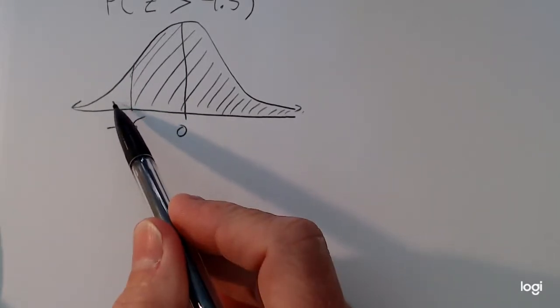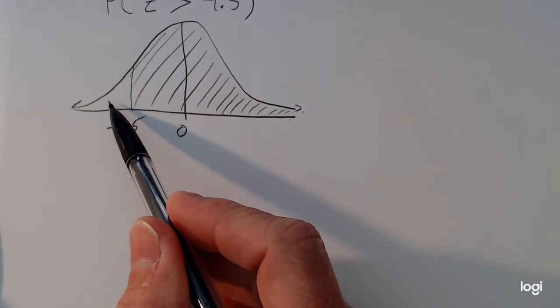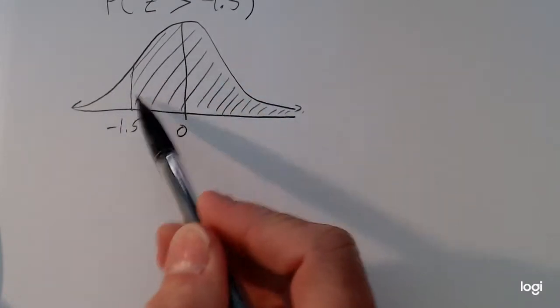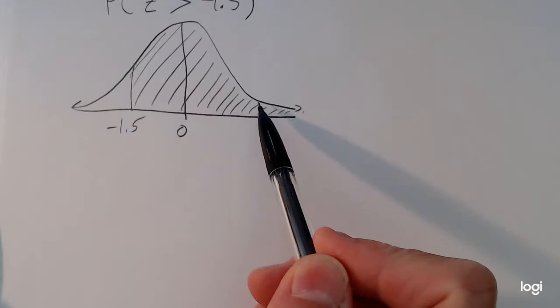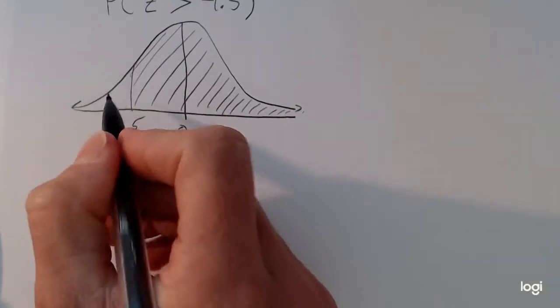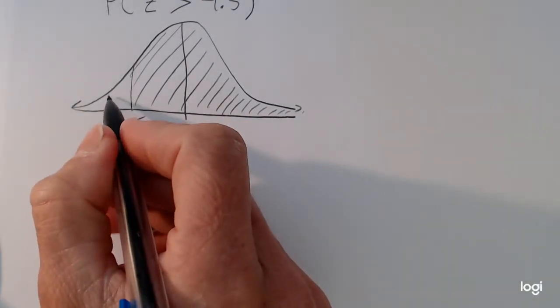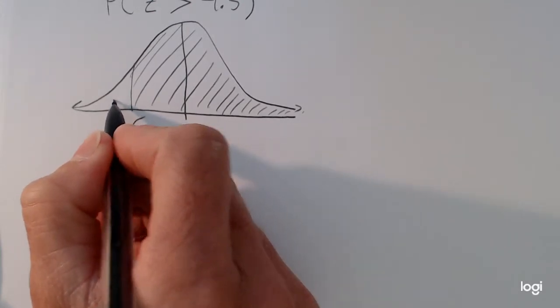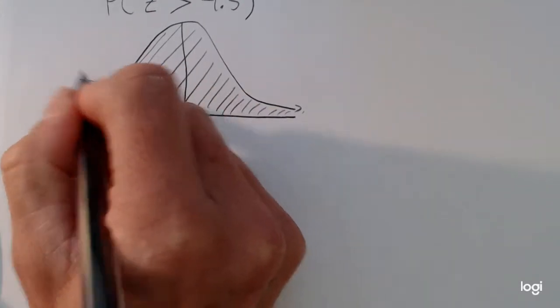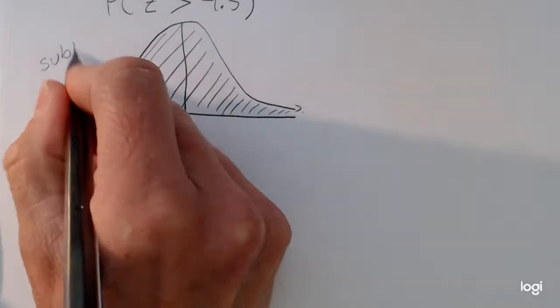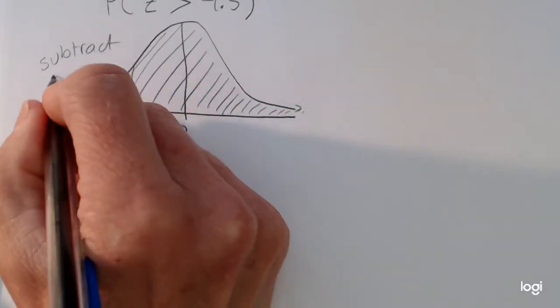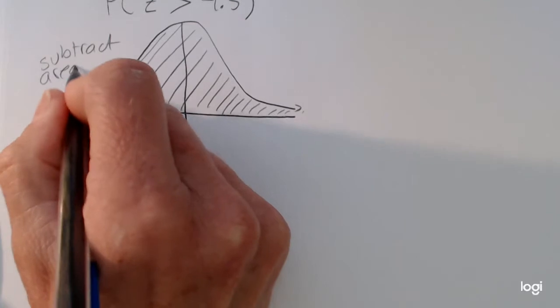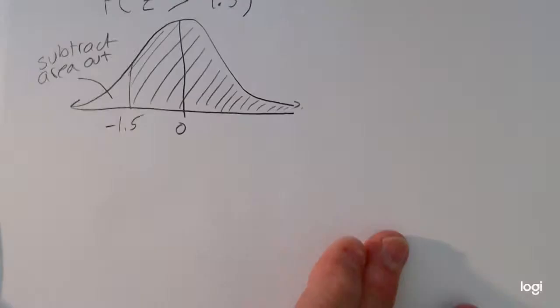To get around that, I'm going to use the fact that the total area under the curve is 1, or 100%, and I'll use the table to find this unshaded tail first and subtract it out. In other words, I'm going to subtract it from 1.